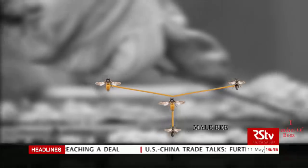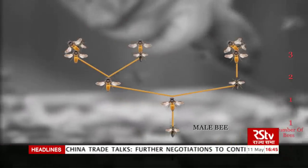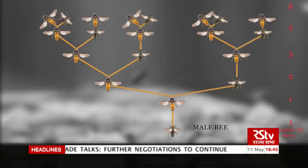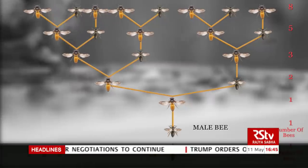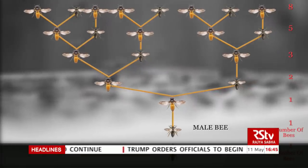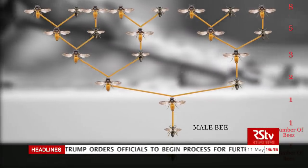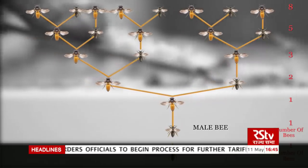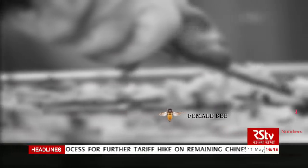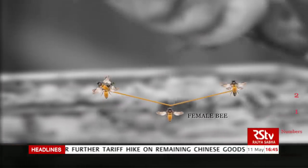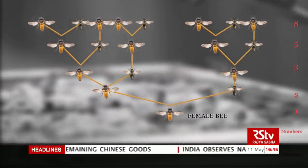When it comes to the bee family tree, males have 2, 3, 5, and 8 grandparents, great-grandparents, great-great-grandparents, and great-great-great-grandparents respectively. Following the same pattern, females have 2, 3, 5, 8, and so on — all numbers from the Fibonacci sequence.